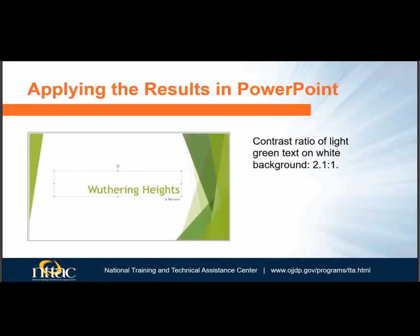How do you fix contrast issues in PowerPoint? In this presentation, the main heading has a contrast ratio of 2.1 to 1, which fails the requirement of 4.5 to 1 for normal text. This particular heading is 36 point, which makes it large text. The requirement for color contrast for large text — at least 18 point or 14 point bold — is 3 to 1. So the contrast ratio fails for large text in this case.